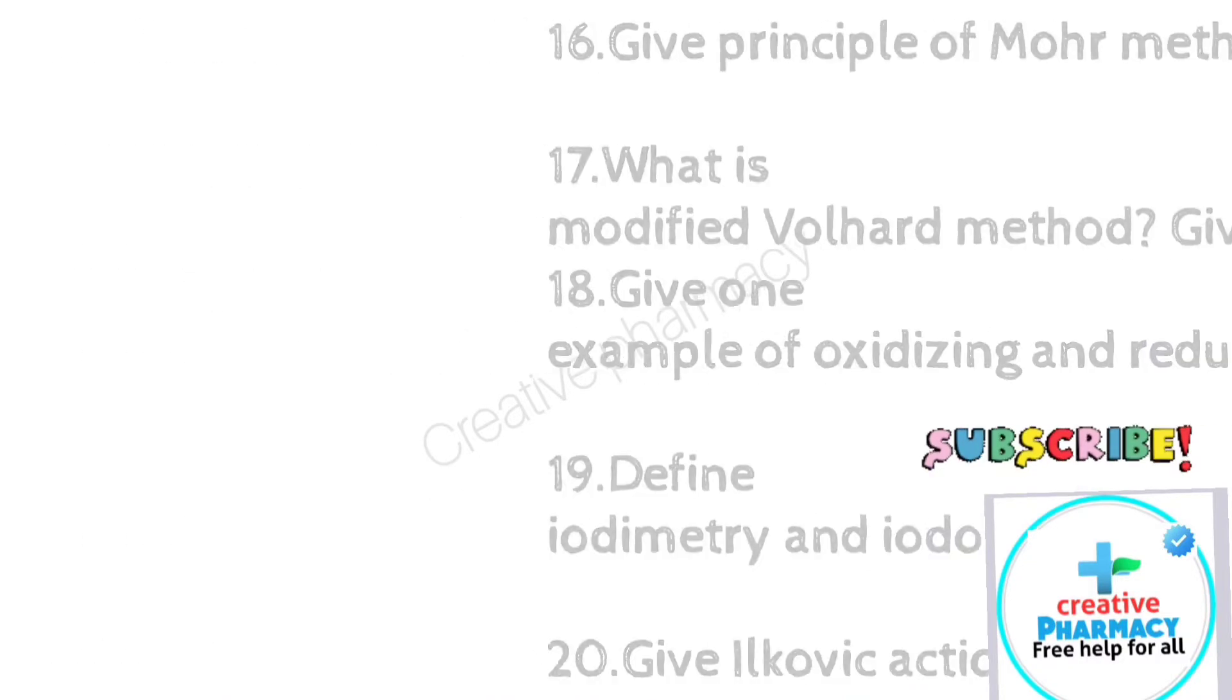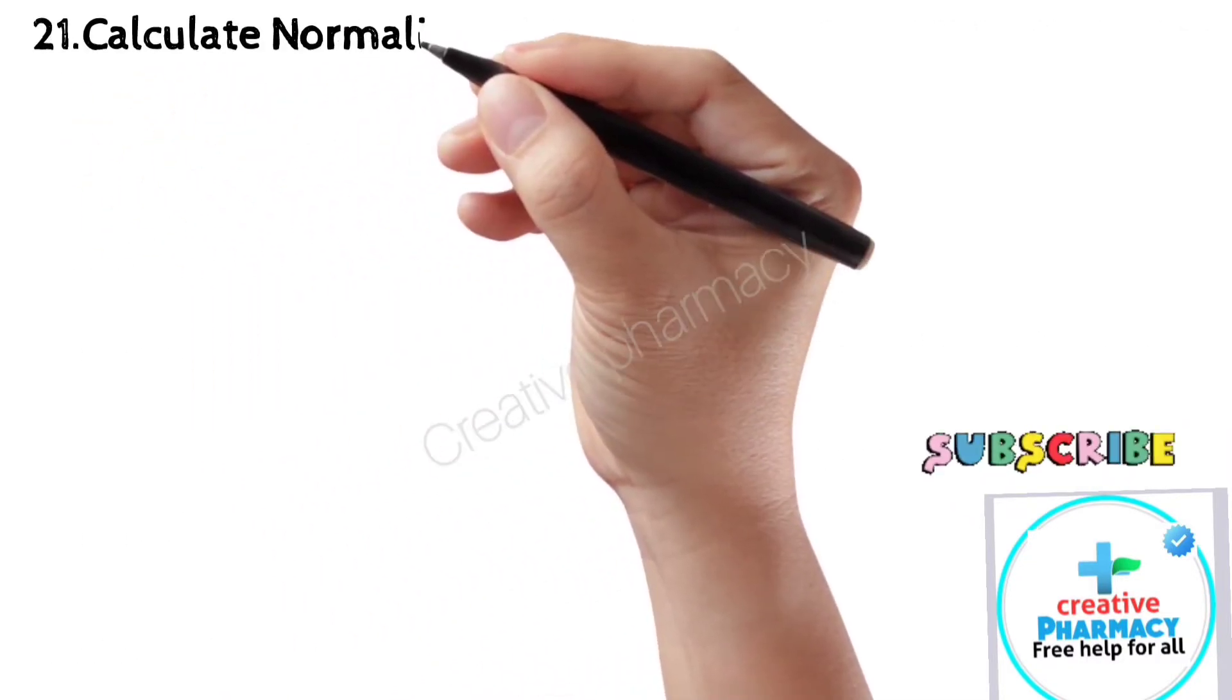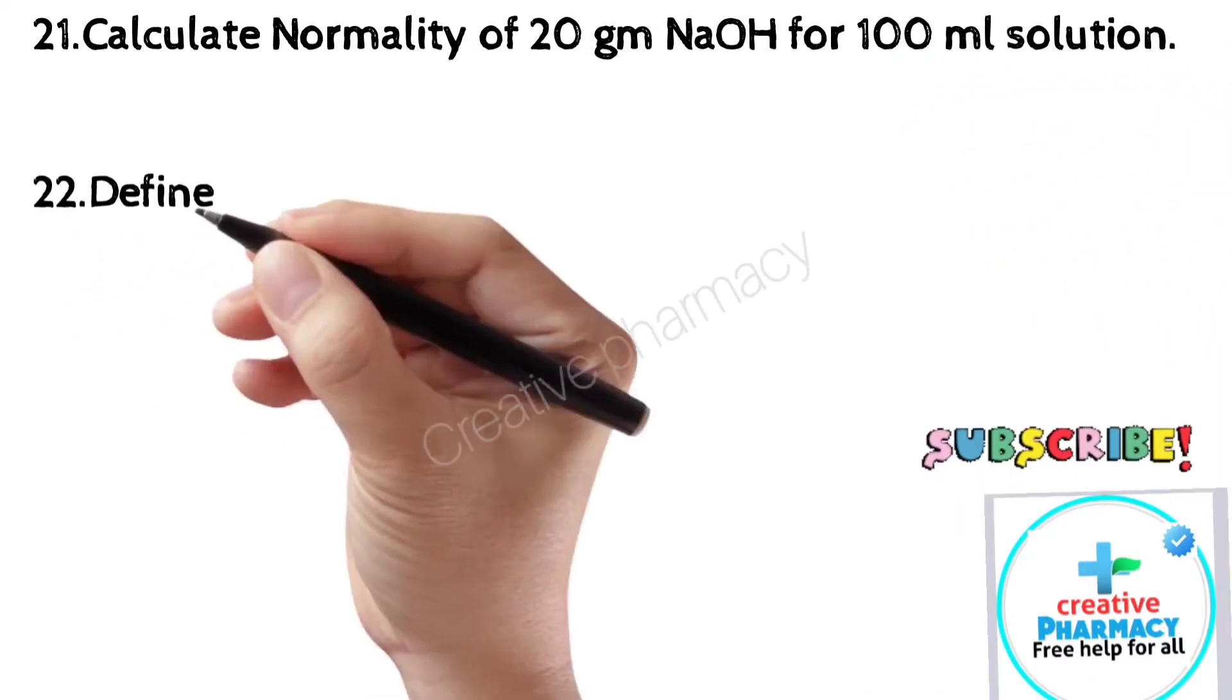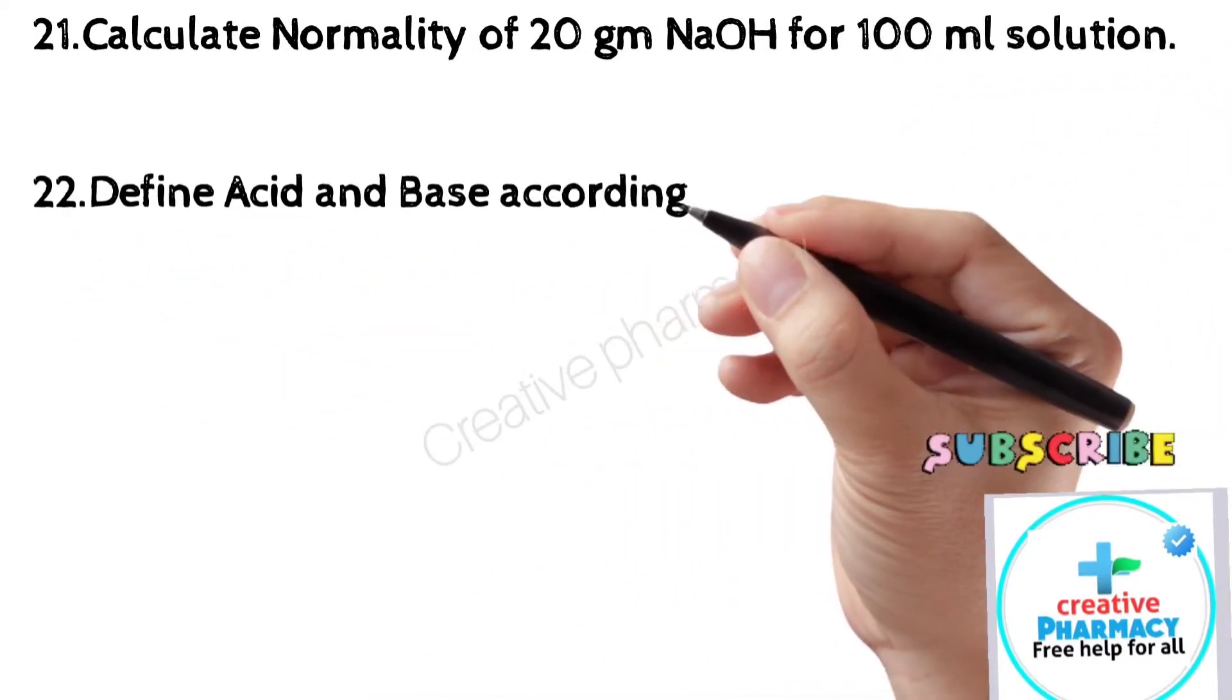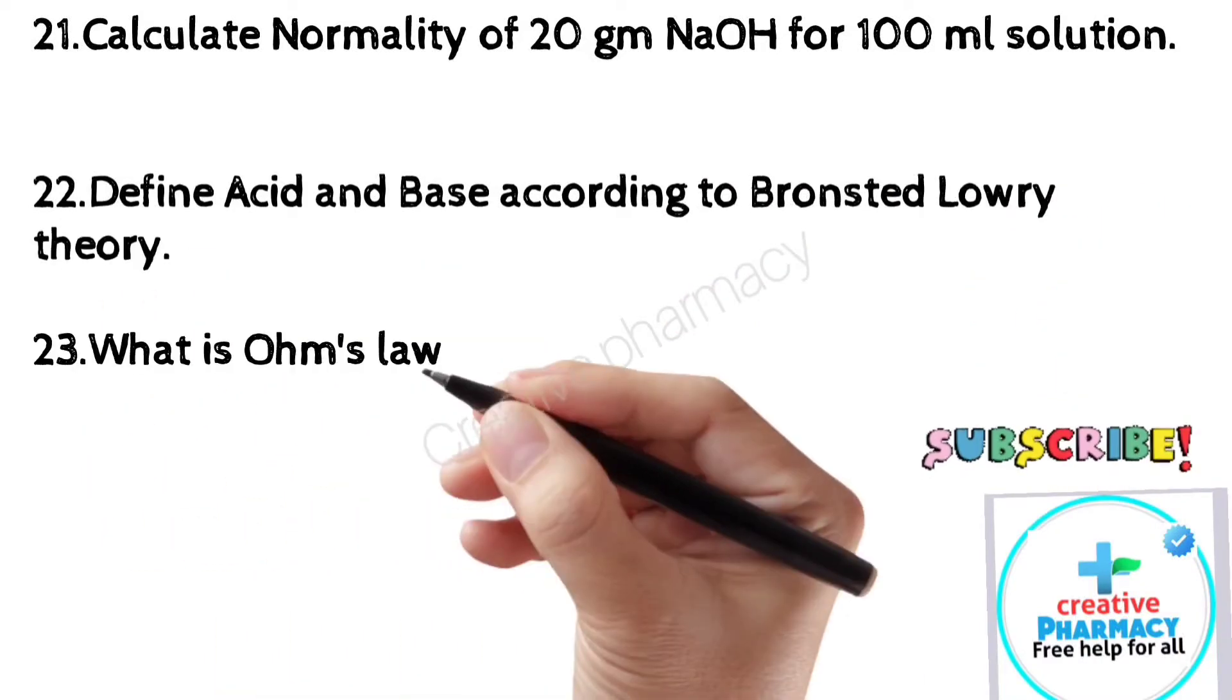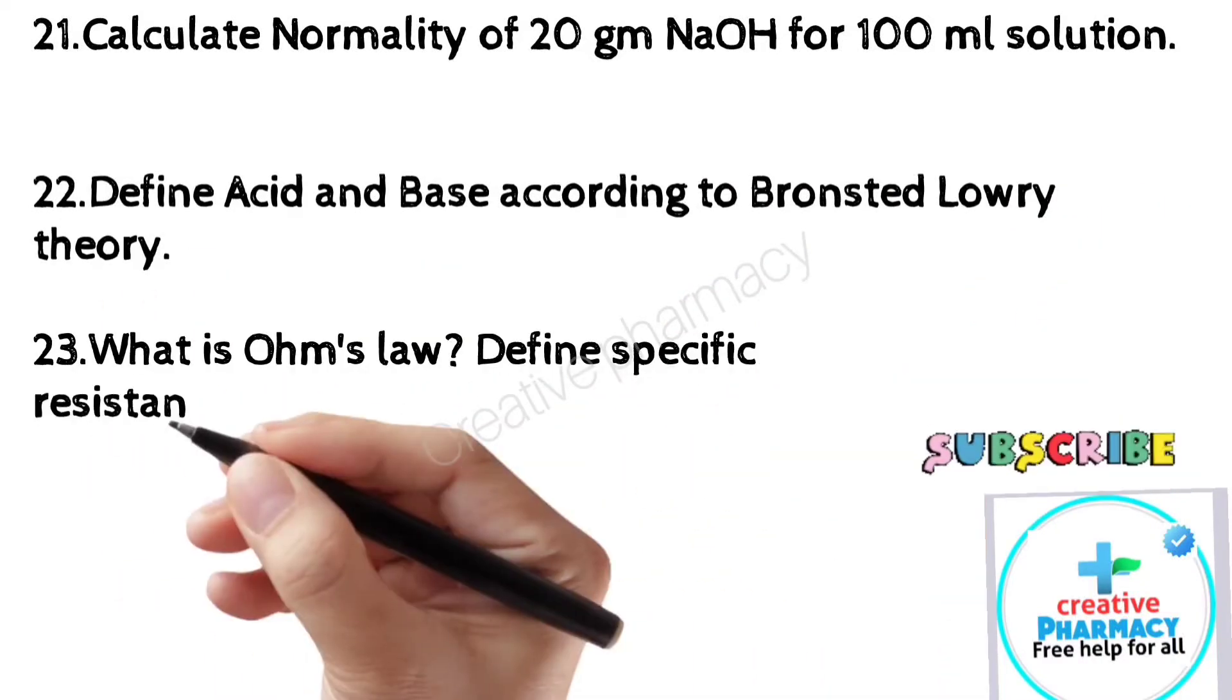21. Calculate normality of 20 gm NaOH for 100 milliliters solution. 22. Define acid and base according to Bronsted-Lowry theory. 23. What is Ohm's law? Define specific resistance.